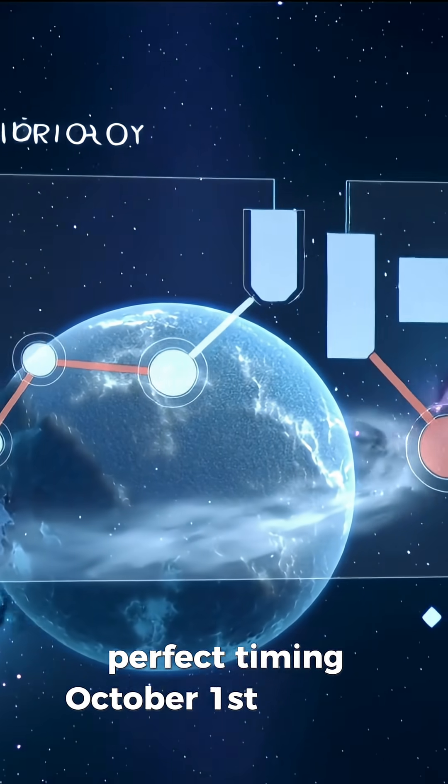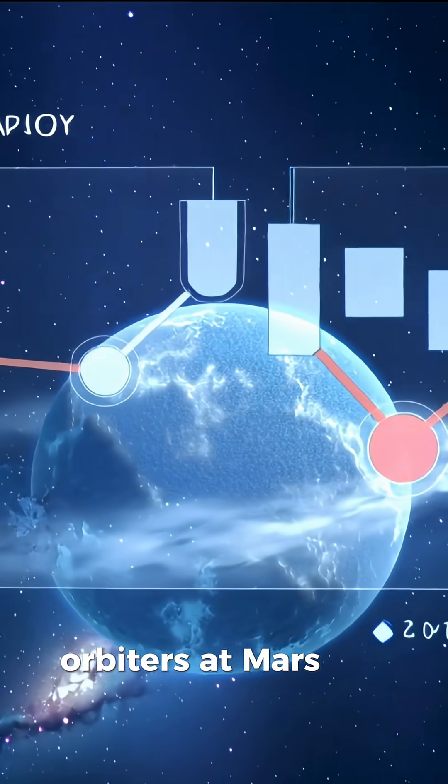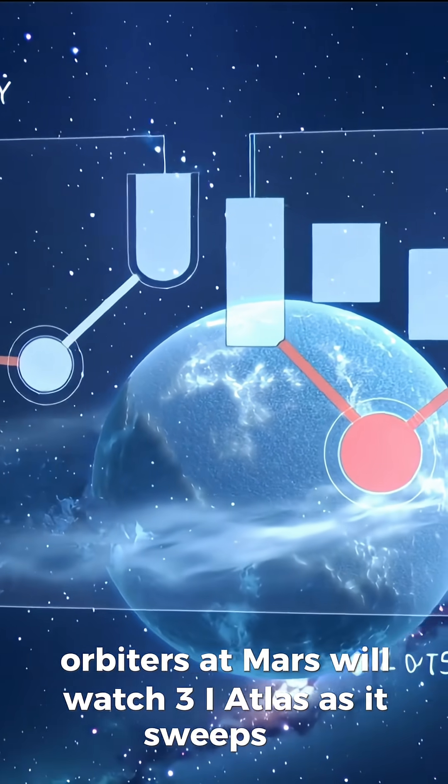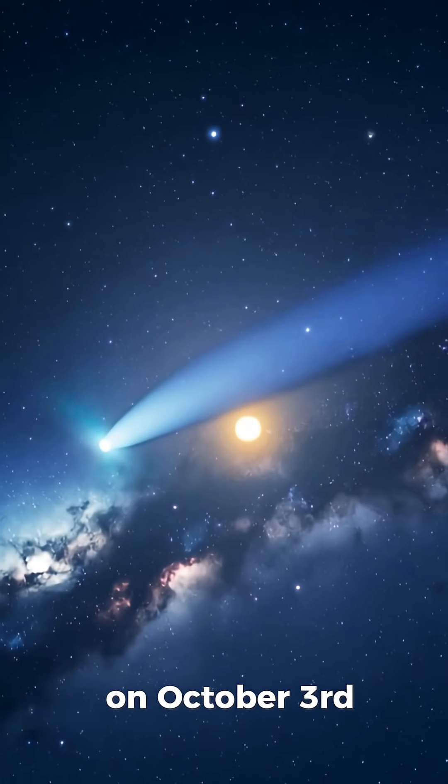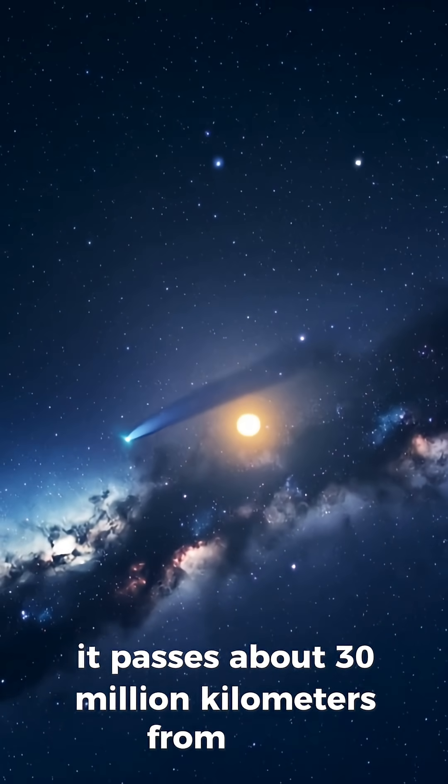Perfect timing. October 1st to the 7th, orbiters at Mars will watch 3i Atlas as it sweeps by. On October 3rd, it passes about 30 million kilometers from Mars.